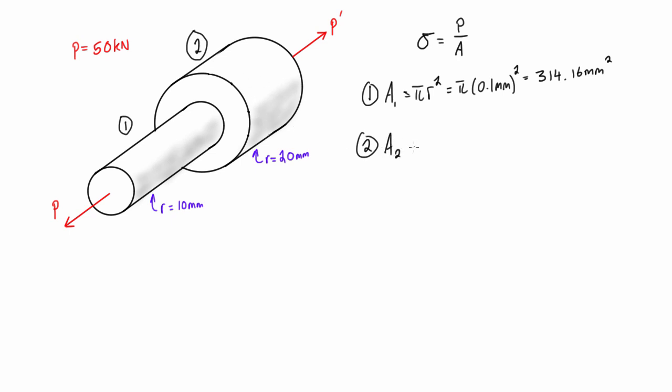While we're at it, let's go ahead and calculate our area for this larger cross section here in section 2. We get π r squared and that is just π times 20 millimeters squared, and that gives us a cross sectional area of 1256.64 millimeters squared.